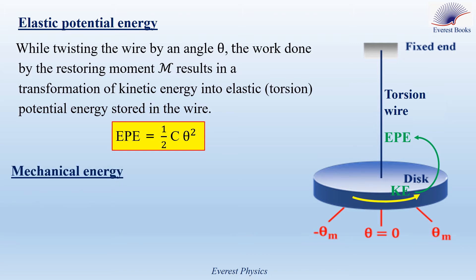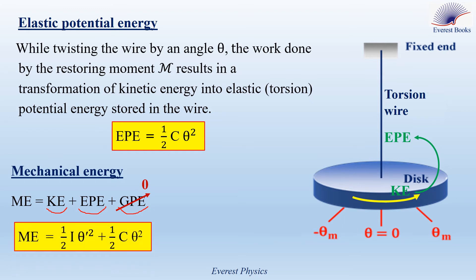Expression of the mechanical energy in the torsion pendulum-Earth system. The mechanical energy equals the kinetic energy of the rigid object plus the elastic potential energy stored in the torsion wire plus the gravitational potential energy. Taking the horizontal plane through the center of mass as the reference level, GPE is always zero. Therefore, the mechanical energy equals one-half I theta-prime squared plus one-half C theta squared.